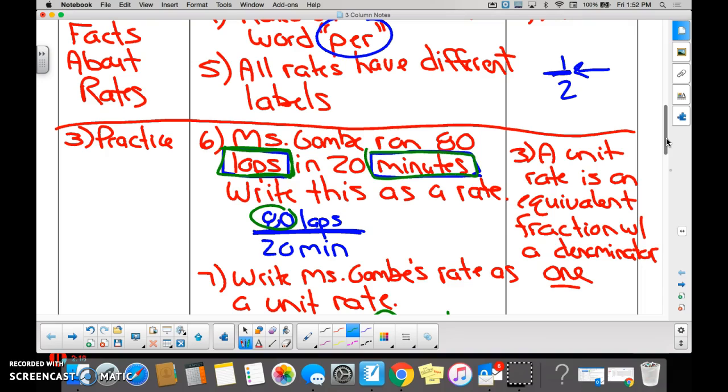So, we have 80 laps per minutes—per 20 minutes. What does this line mean again? What's the word? Per. So, 80 laps per 20 minutes. She's pretty slow, isn't she? Okay. Now, if we slide down.